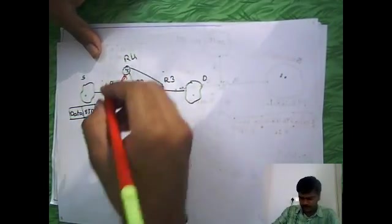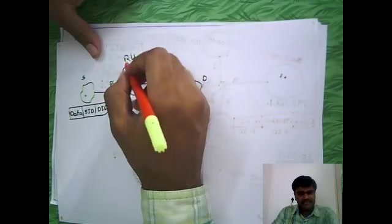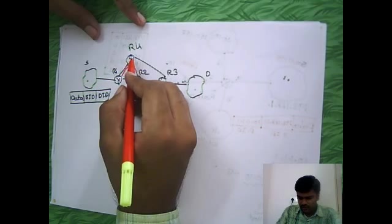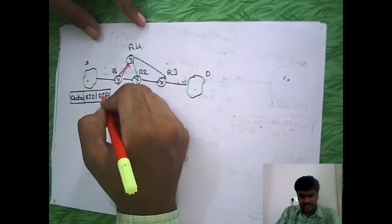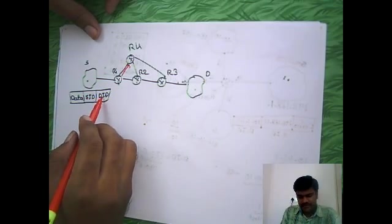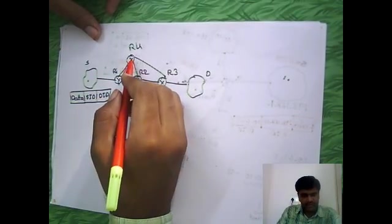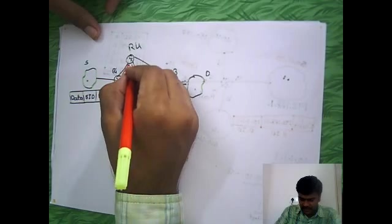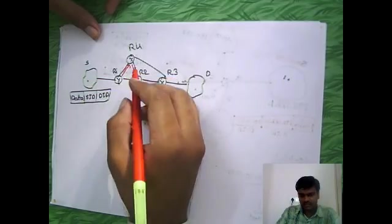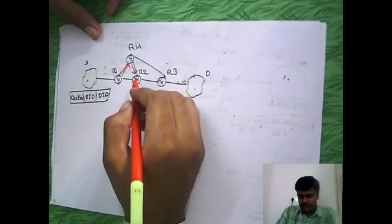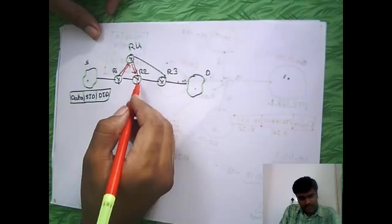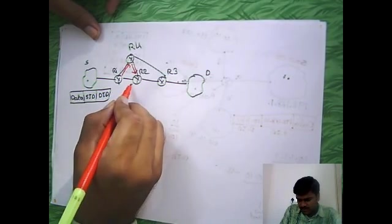Then the same case exists at R4. Assume that it also doesn't have any entry about the network which is mentioned in the network IP address in this package. So it also has one default address and it will forward to R2. Assume it is the default router. Same case at R2, but its default router is assume this one.